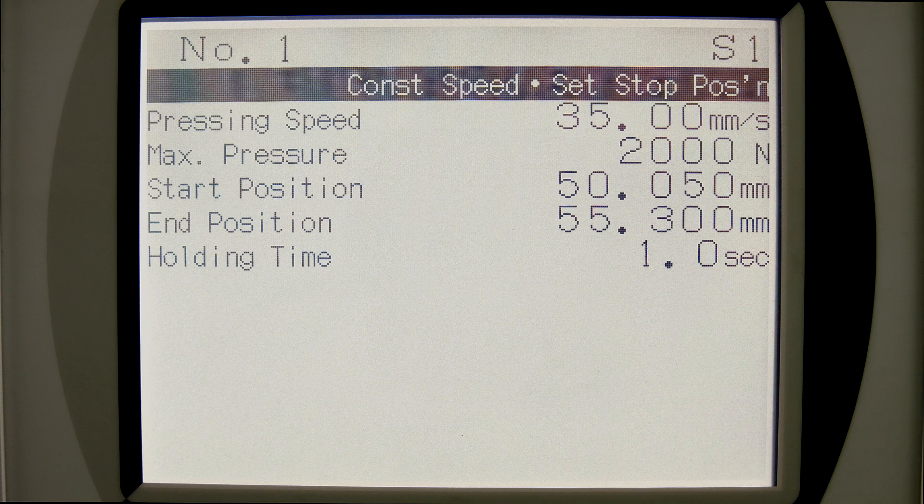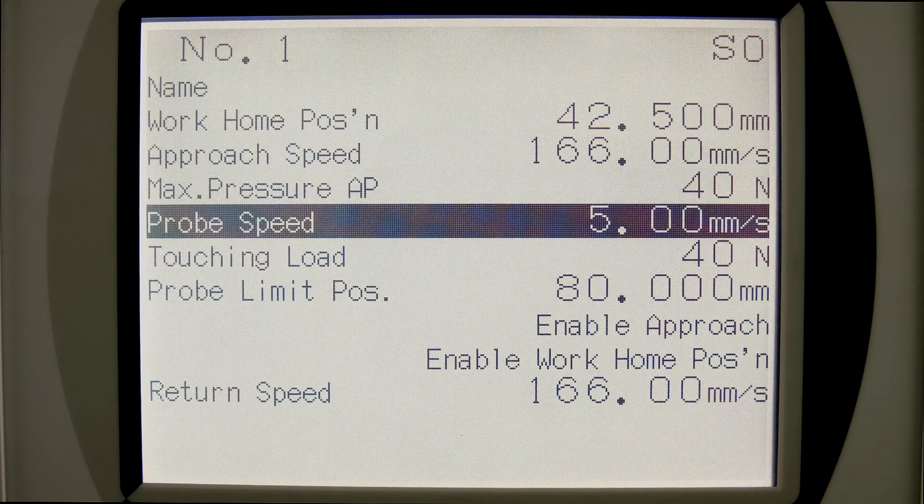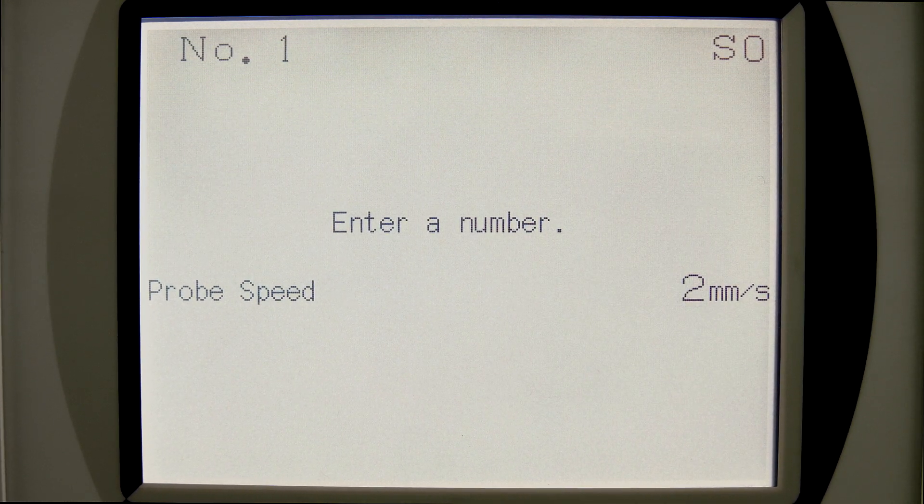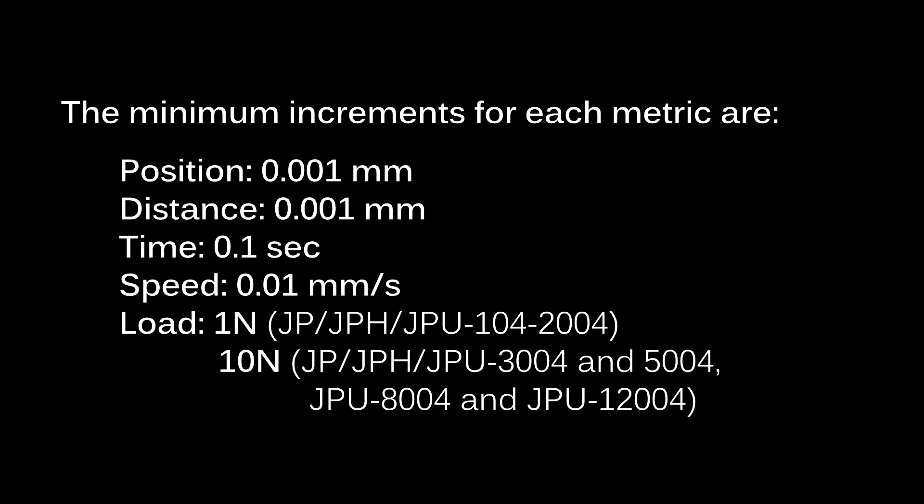To change from the default values, simply use the cursor to move the selection up and down and press enter to edit. Use the number pad on the operation panel to edit numeric values. This screen describes the minimum increments for each metric.